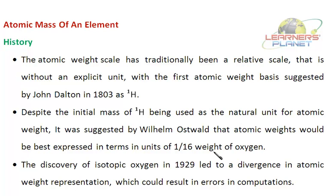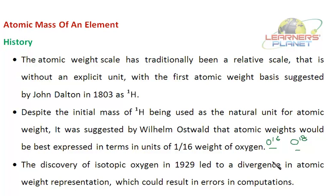However, the isotopes of oxygen were soon discovered — O-16 and O-18. Isotopes are atoms of the same element having different atomic masses. So both are oxygen but their atomic masses are different: one is 16 and the other is 18. They have the same atomic number. This raised the question of which oxygen to use as a reference, leading to errors in computation.